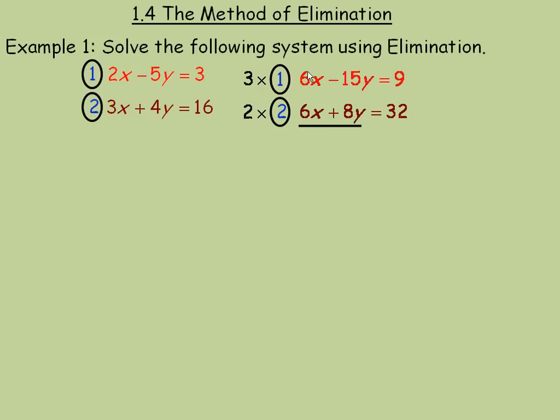And so, if we were to subtract them, 6x minus 6x is 0, nothing. That's how we eliminate the x's.